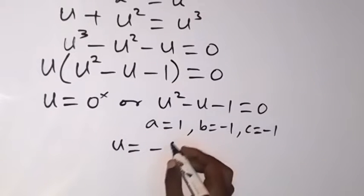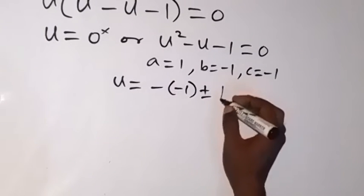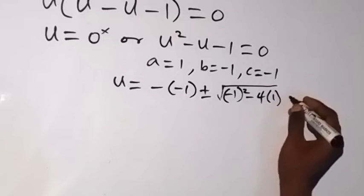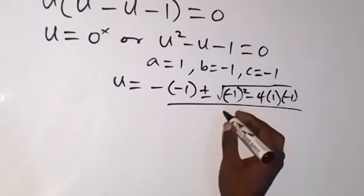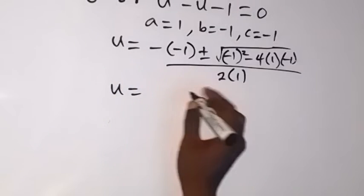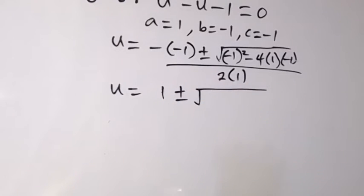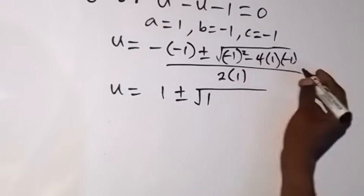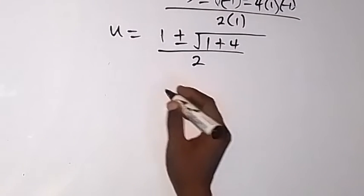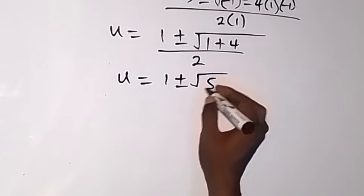From there we can say u equals minus b — that's minus of minus one — plus or minus the square root of b squared, which is minus 1 squared, minus 4 times a times c, which is 4 times 1 times minus 1, all over 2a, which is 2 times 1. Solving this, we get 1 plus or minus square root of 5, all over 2.